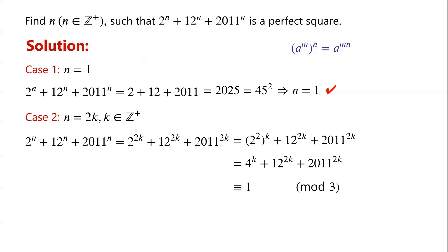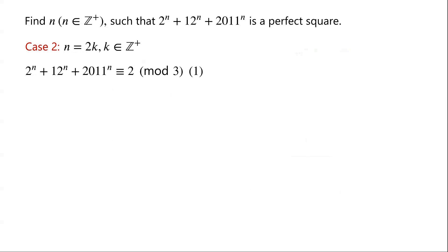As 12 is congruent to 0 modulo 3, so 12^(2k) is congruent to 0 modulo 3. As 2011 is congruent to 1 modulo 3, so 2011^(2k) is congruent to 1 modulo 3. Therefore, the algebraic expression 2^n + 12^n + 2011^n is congruent to 2 modulo 3.